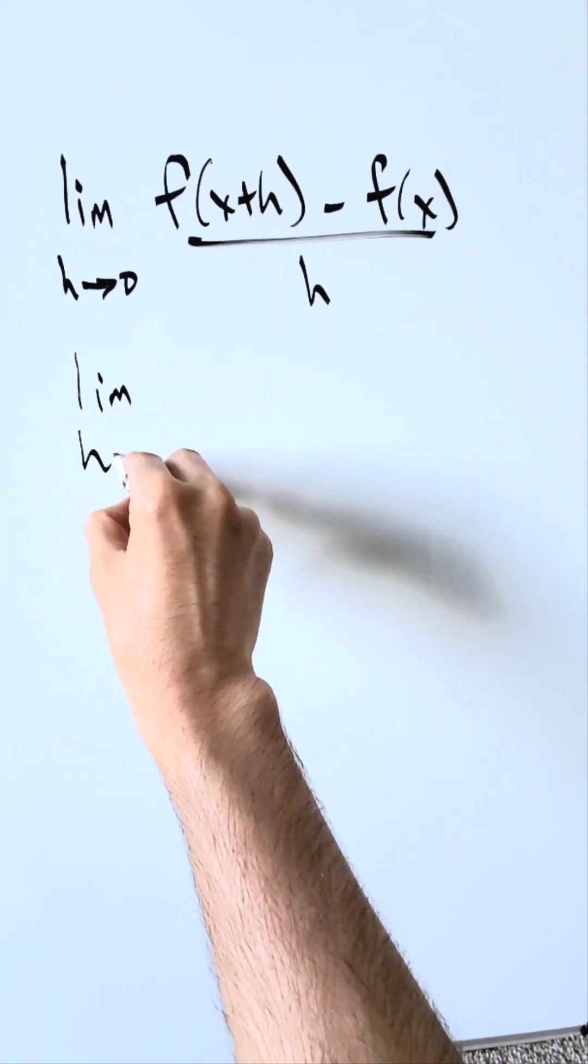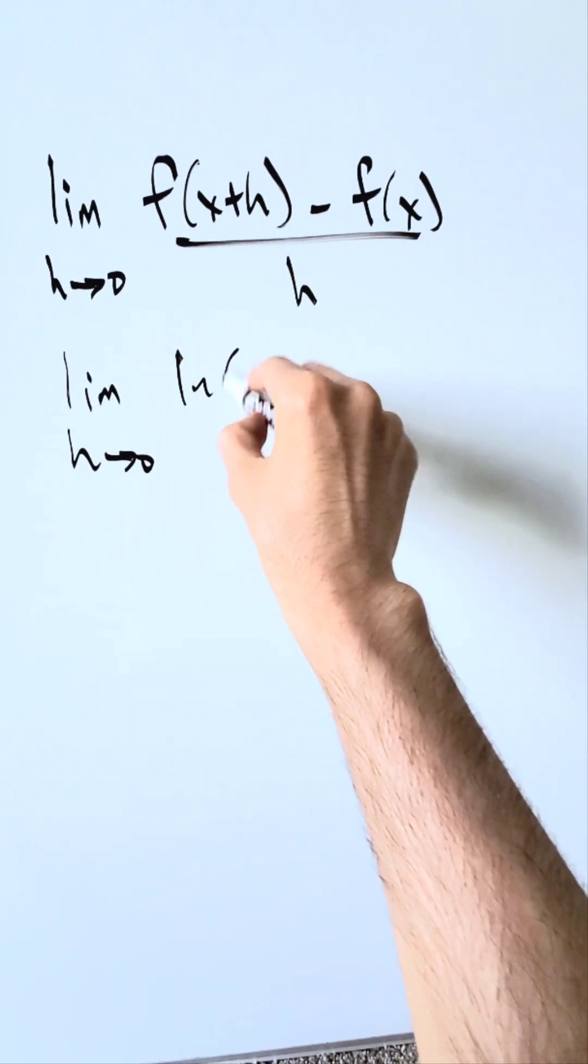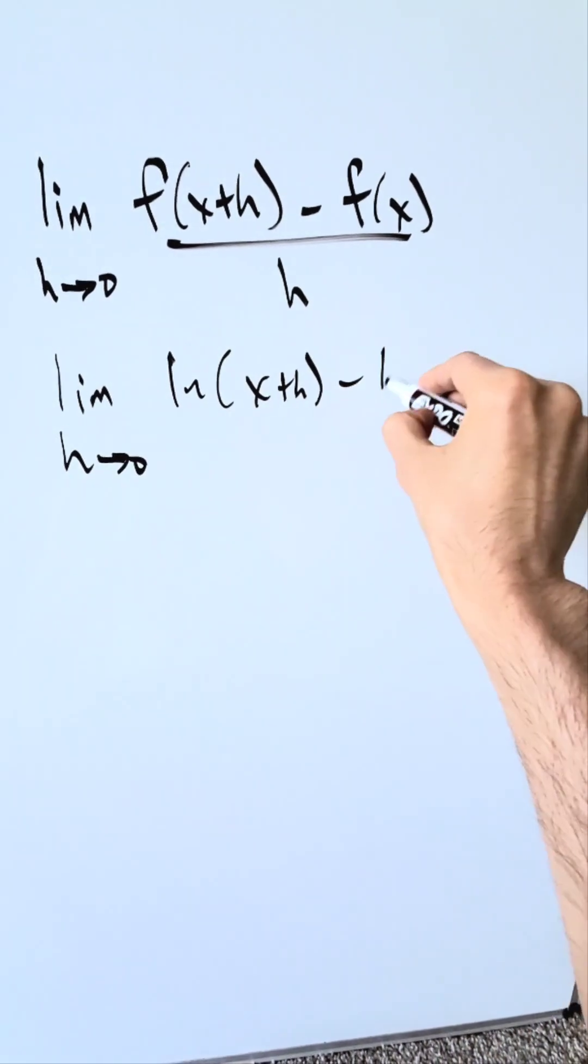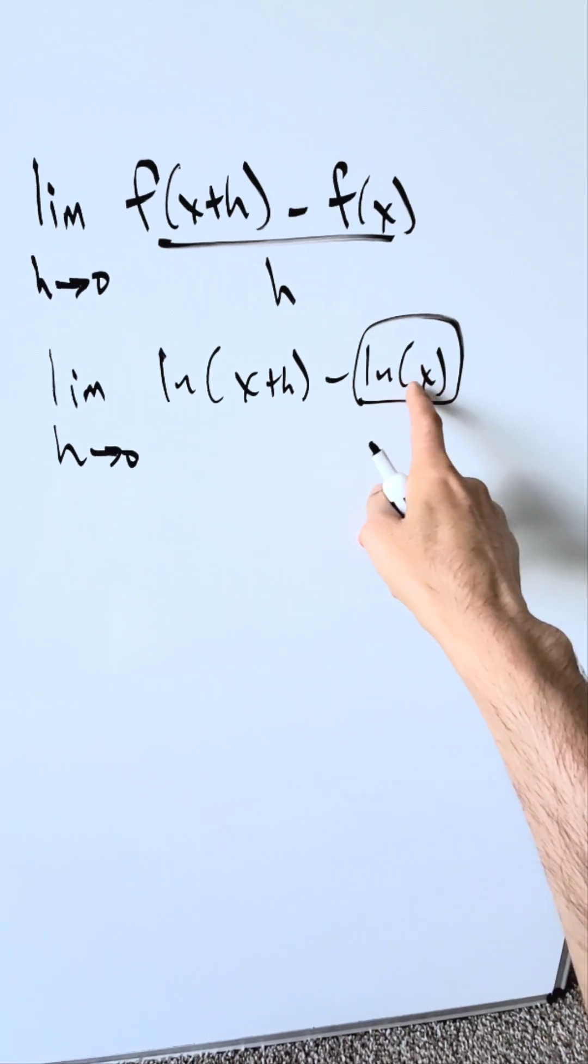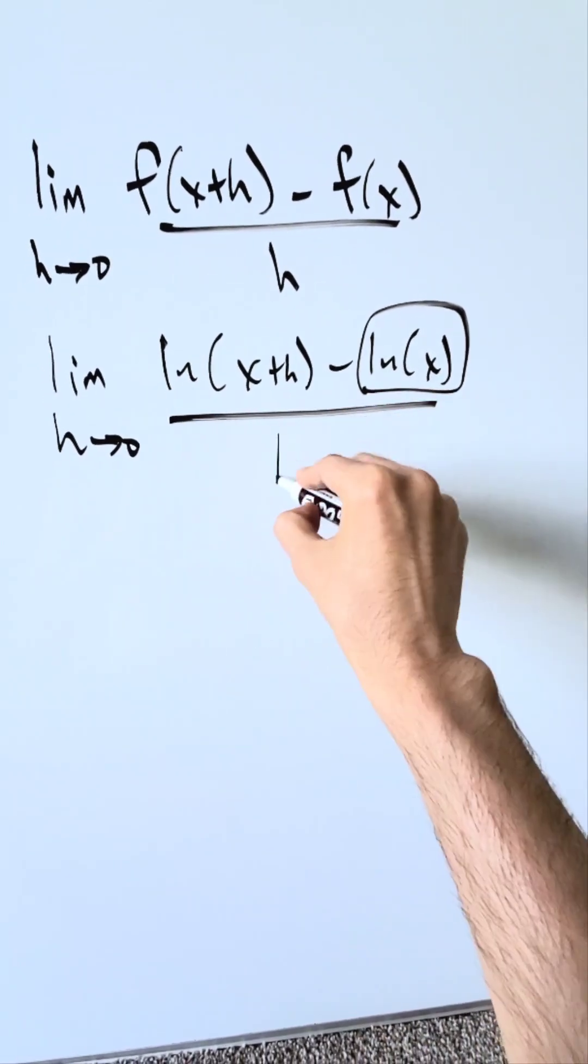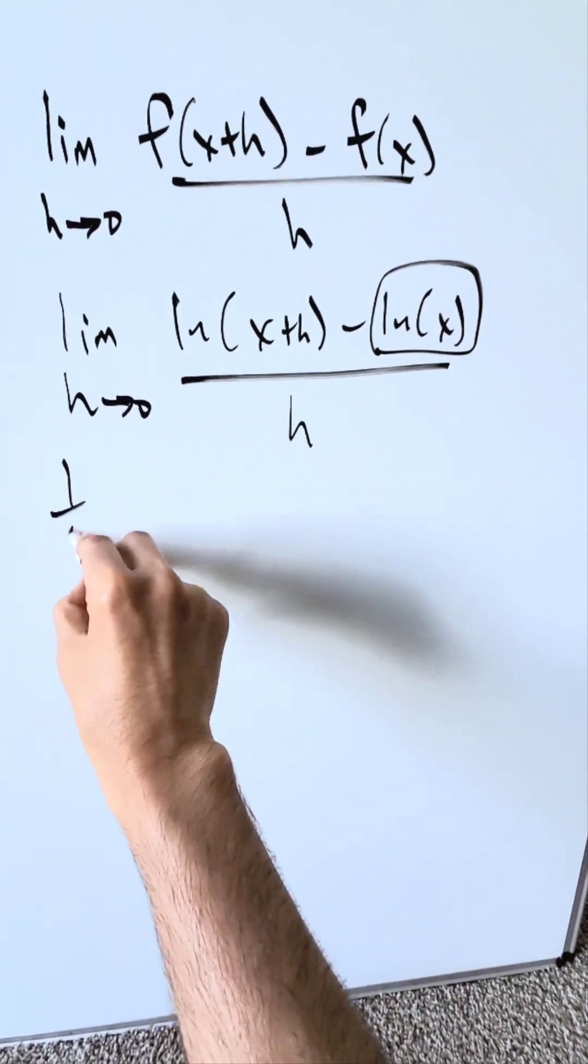I'm going to do that. I have limit as h approaches 0, we have natural log of x plus h minus natural log of x. This right here is my definition being applied to this basic function right here, natural log x. Pull out the h, 1 over h.